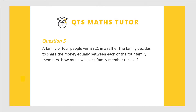A family of 4 people wins £321 in a raffle. The family decides to share the money equally between each of the 4 family members. How much will each family member receive?